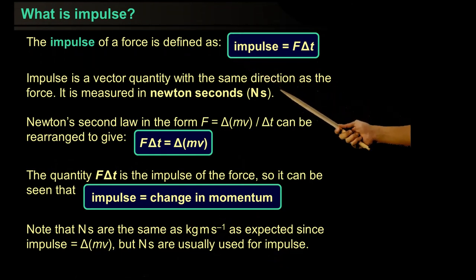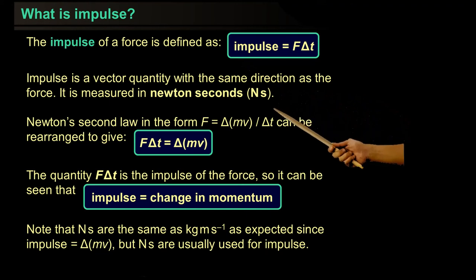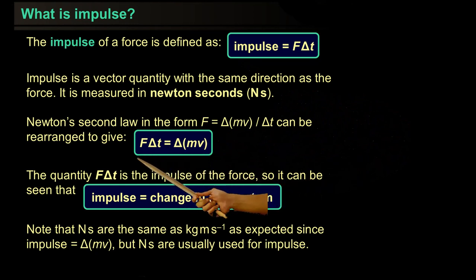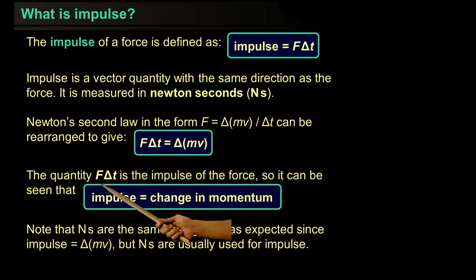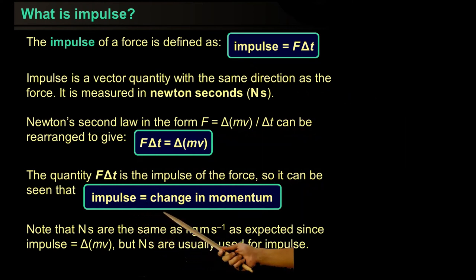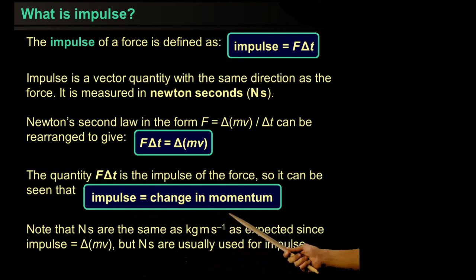We can rearrange the impulse formula with the help of Newton's second law of motion, which is F equals ma. The quantity F delta t is the impulse of the force, so it can be seen that impulse is the same as change in momentum.